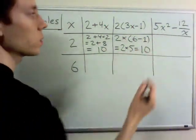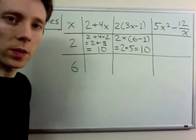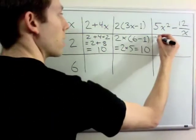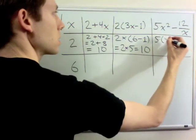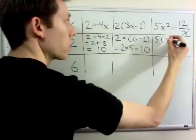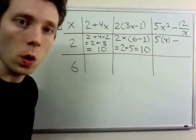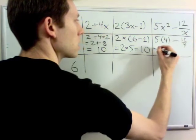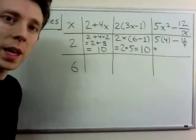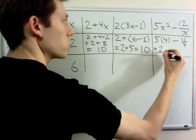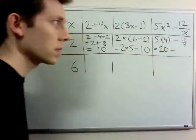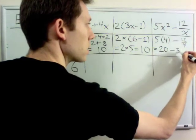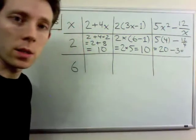For the third expression with x equals 2, there are a lot of operations, so we do the exponent first: 2 squared is 4. So we have 5 times 4, minus 12 divided by 4. Doing the multiplication on the left gives 20. Then 12 divided by 4 is 3. The final answer is 17.